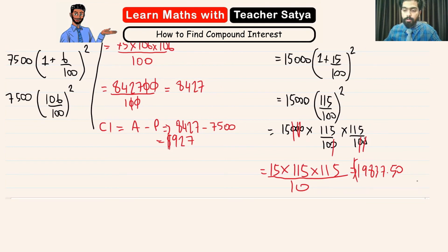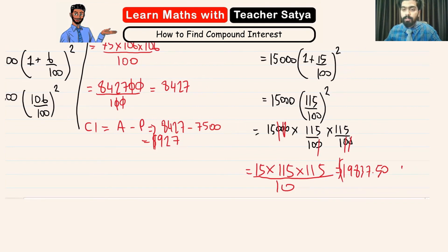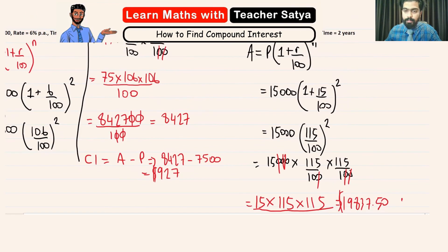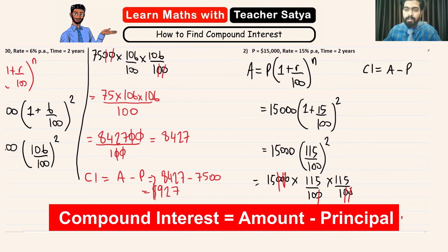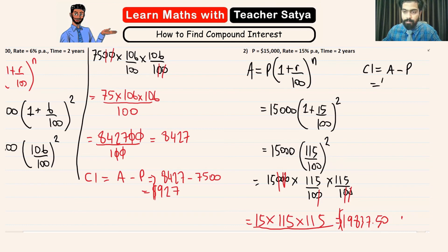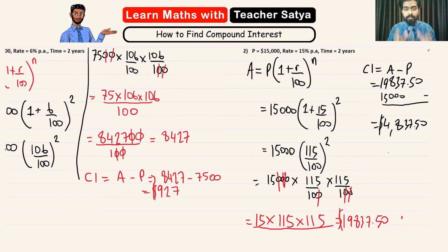But, we are going to find the CI in order for us to find the compound interest. What we will be doing is we will take the amount minus the principal. So, the amount what we have here is 19837.50 minus it with 15,000. And, what we would get here is 4837.50 would be our compound interest. And, that is how we would find the compound interest using its formula.